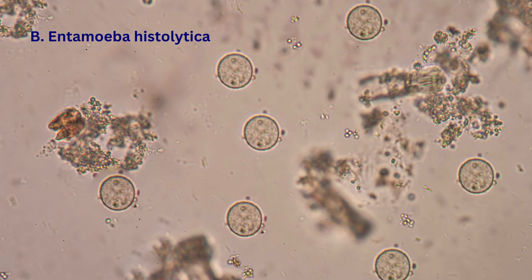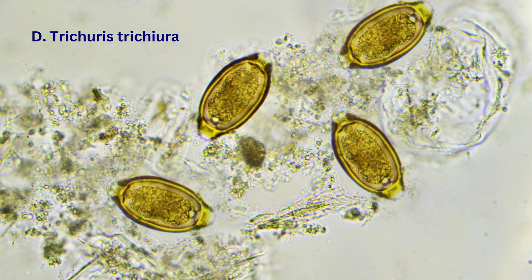B. Entamoeba histolytica is also a protozoan, responsible for amoebic dysentery. Its cysts and trophozoites are found in stool, not urine.